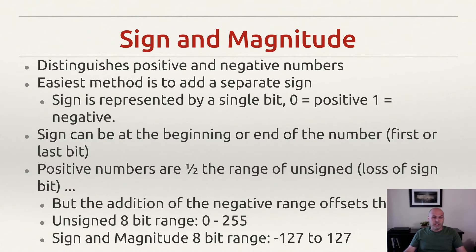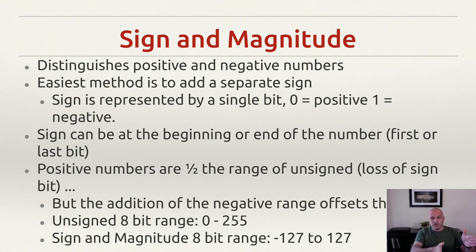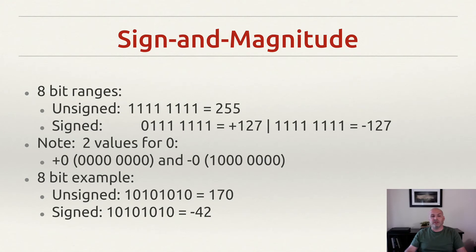This obviously has an effect on the range, just like we talked about with binary coded decimal — losing range because you encoded a decimal number with a range of 0 through 9 into an essentially hexadecimal number, using four binary digits with a range of 0 through 15, and losing those extra five digits. Here, we're losing range in positive space because we're giving up some of that range to negative space. Even though the range of the number stays close to the same — and the reason it's 'close to' we'll get to in a moment, it has to do with having a second zero — we've pivoted where the range is. So instead of the range being from 0 to 255, we've shifted it and put the 0 in the middle: it's now 0 to 127 and 0 to negative 127.